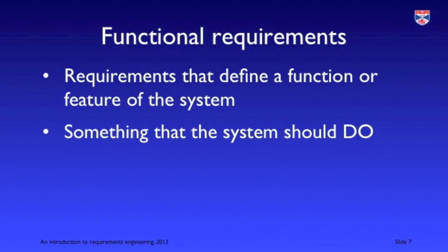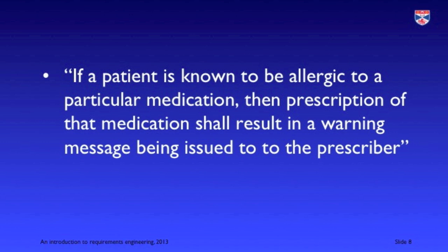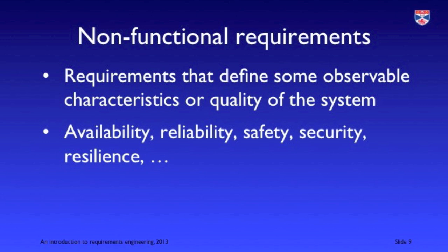A functional requirement is something that the system should do — some function or feature of the system. An example from a healthcare system: if a patient is known to be allergic to some particular drug, then the system should highlight this to the doctor so that they don't accidentally prescribe that drug.